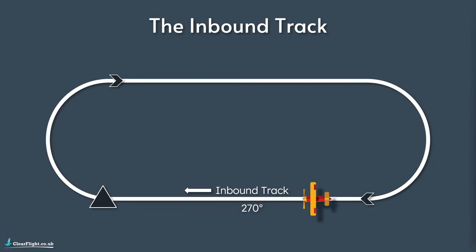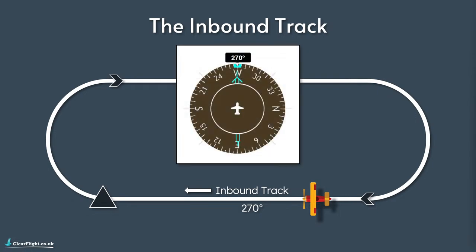The hold is split into four separate parts centred around the holding fix. The first leg is the inbound track - in this example, an inbound track of 270 degrees, so we need to be tracking west towards the holding fix, making this an east-west hold. As you're flying that inbound track with no wind, we're flying a heading of 270 degrees and the bearing pointer is also showing 270, which tells you you're tracking along the correct track to the holding fix.